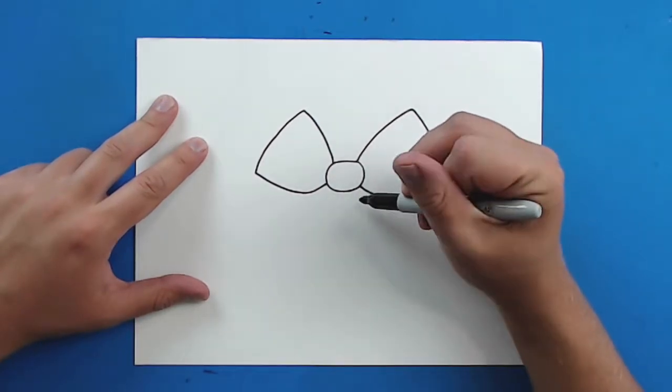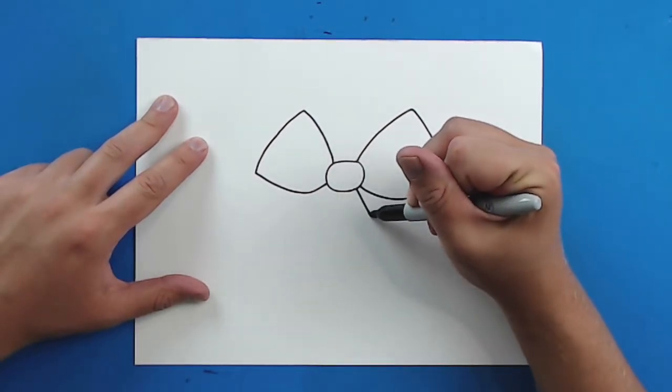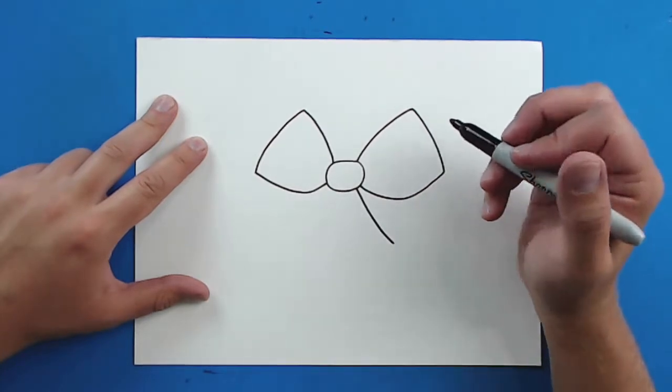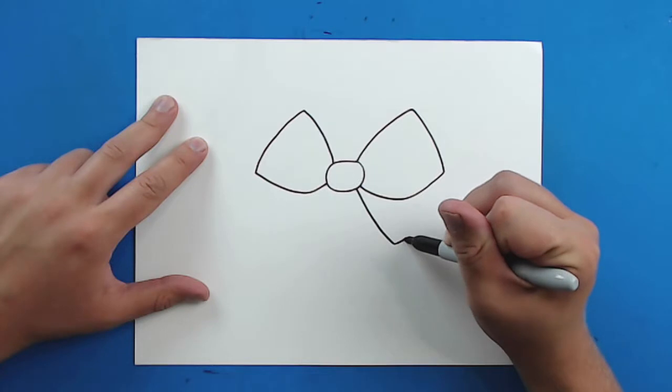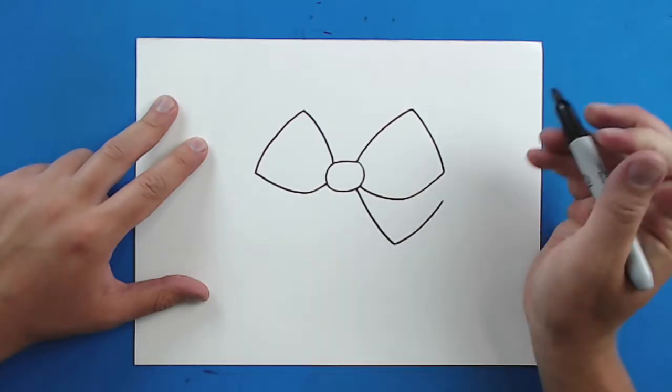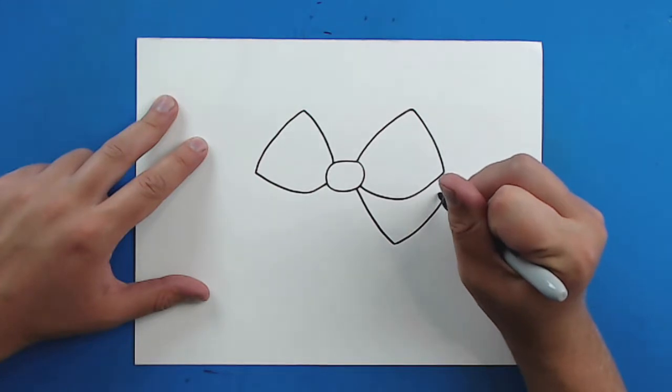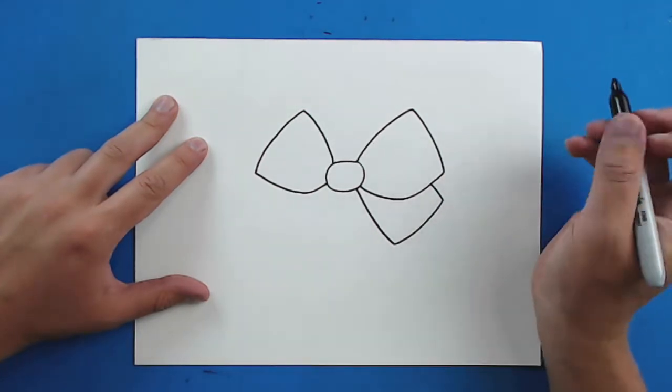Now right here I'm going to draw a line that goes down, and then go over, and then bring it back up with a little diagonal line like this.